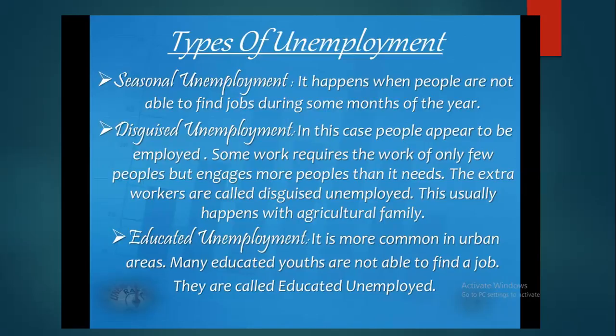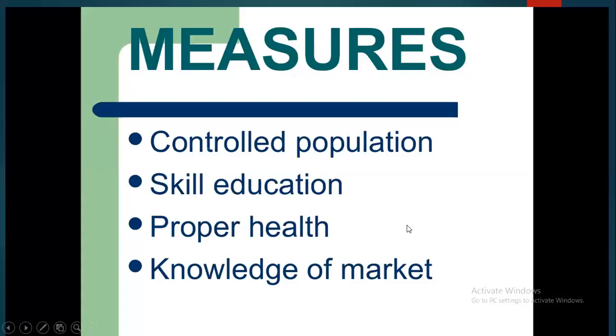Educated unemployment happens mostly in urban areas where people have gone to wonderful universities, but there is no job in the market or in the economy. Next come the measures. What are the measures? Controlled population. We have good resources in our community — good education — for using people as a resource. Having a controlled population, proper skill education, proper health, and knowledge of the market. Then only we can be a good resource for our community.